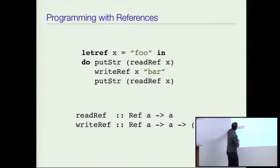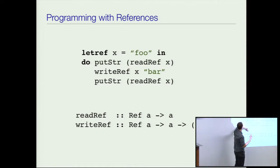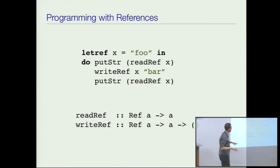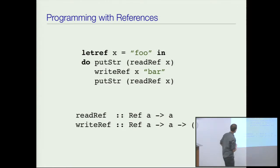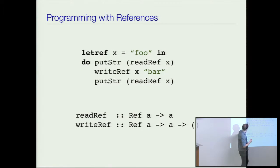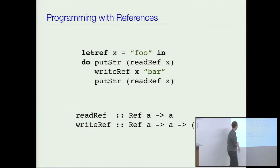What I've done here, instead of saying a value binding like 'let something in', I've said 'let ref' — just making my talk easier. So 'let ref' defines a reference, so x is going to have type ref to string. In my silly example, I'm going to read the reference, put the string foo, write bar into the reference, and then read the reference and get back bar.